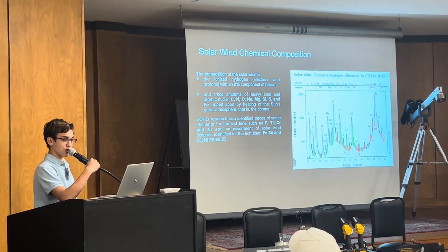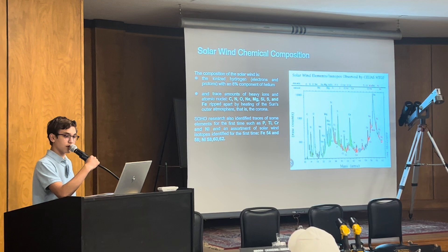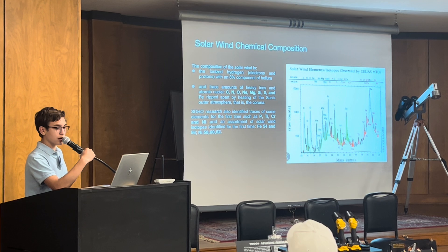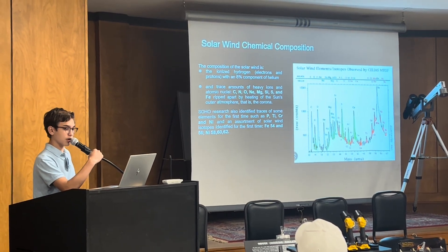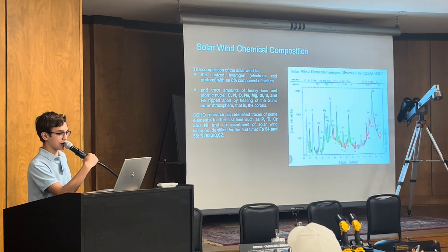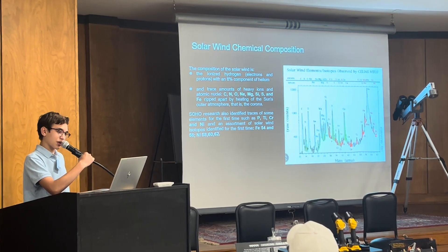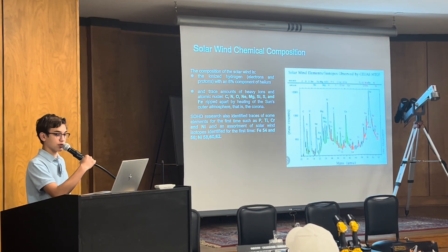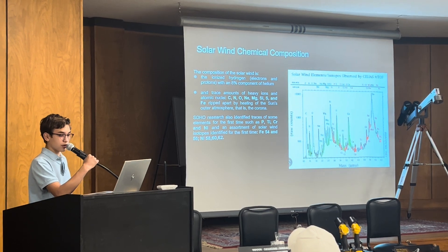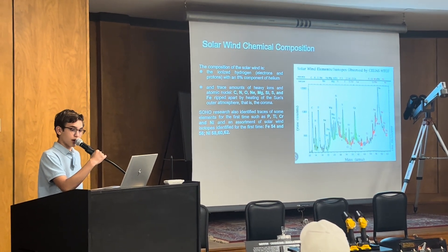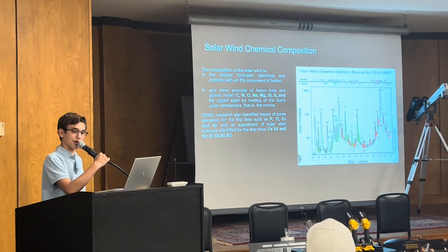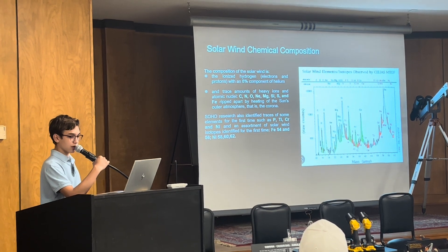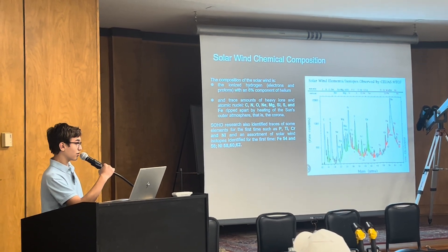The solar wind is a collection of streams of energetic particles that originate on the sun. Ulysses spacecraft measurements show that the solar wind has a fast component and a slow component. The slow wind has a speed of about 400 kilometers per second, and the fast component is about 800 kilometers per second. Although the solar wind is electrically balanced, it consists almost exclusively of charged particles — stripped nuclei from atoms — which are excellent electrical conductors, technically known as plasma.